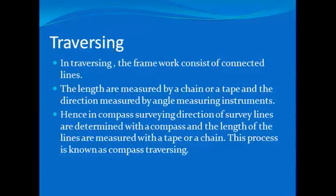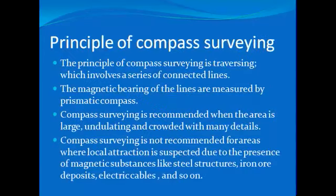The accuracy of compass traverse is also limited. The principle of compass surveying is traversing, which involves a series of connected survey lines. The magnetic bearings of lines are observed by compass and the distance of the lines are measured by chain or tape.